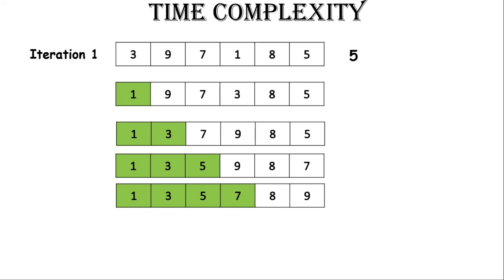Time complexity — the main factor is the number of comparisons. If we trace through the process, we can easily compute our time complexity. In the first iteration, we determine the number of comparisons.